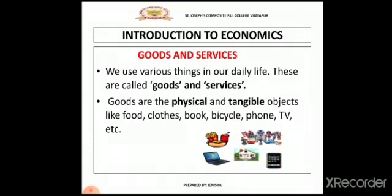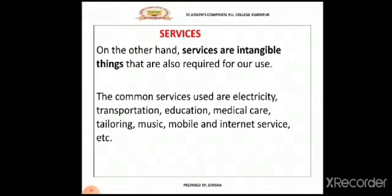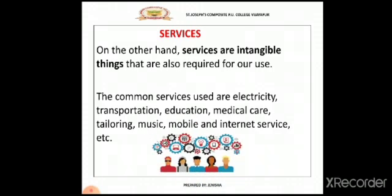The nature of goods and services are different. Goods are physical and tangible objects. That means goods we can see, we can touch, we can smell and feel. But what about services? Services are intangible things. That means we cannot touch, we cannot smell, we cannot see, but we can feel them. The major common services are electricity, transportation, education, medical care, tailoring, music, and mobile and internet services. In this way, these are the two common terms used in our daily life.